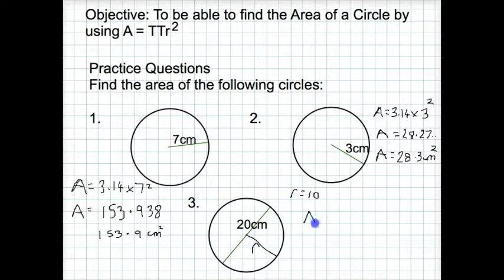So if we write this down, the formula is area equals π, 3.14, times the radius, which in this case is 10 squared.